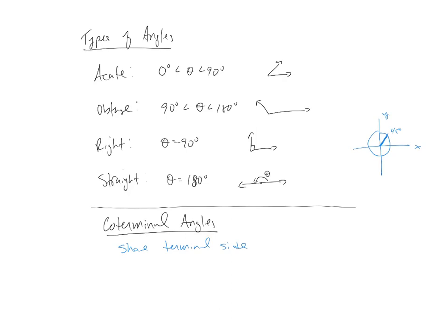So what we say is that alpha and beta are coterminal if the measure of beta equals the measure of alpha plus k times 360 degrees. And that k that we have, that is an integer. So integers being allowed to be positive or negative, the negative just would say that if we start here at 45 degrees and we go around now the other direction, we're still going to be at the same place.